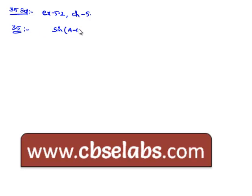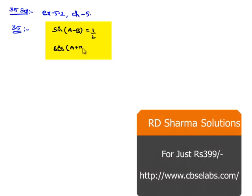sin of a minus b is equal to 1 by 2 and cos of a plus b is also given as 1 by 2.